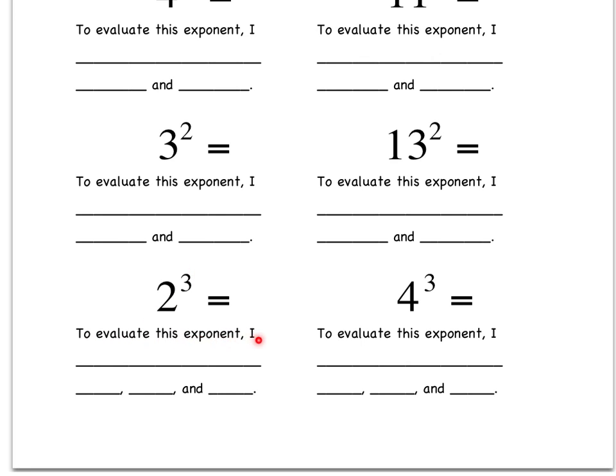2, 2, and 2, because I multiplied 2 by itself 3 times. So 2 times 2 is 4, times 2 is 8. There's my answer. Let's move on to the back.